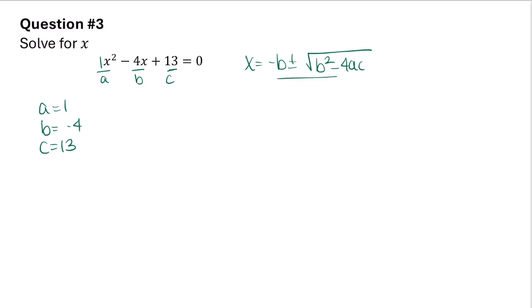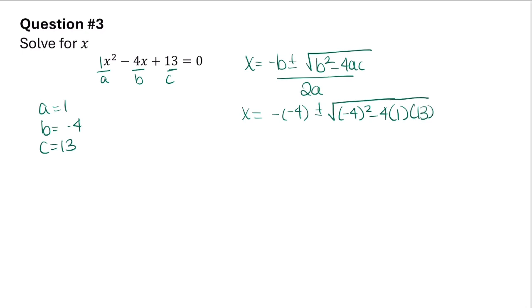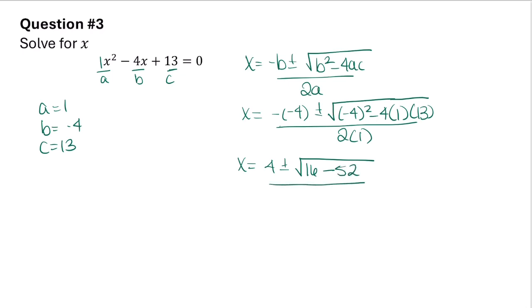I'm going to plug everything in and then simplify. So I have negative of negative 4 plus or minus the square root of negative 4 squared minus 4 times 1 times 13, all divided by 2 times 1. That gives x equals 4 plus or minus the square root of 16 minus 52, which is negative 36, all over 2.